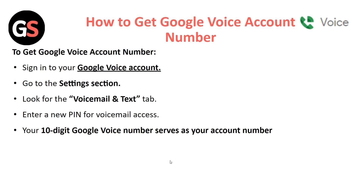To get a Google Voice account number, you have to sign into your Google Voice account, then go into the Settings section and look for the option called Voicemail and Text. Click on this, then enter a new PIN for voicemail access. Your 10-digit Google Voice number serves as your account number.